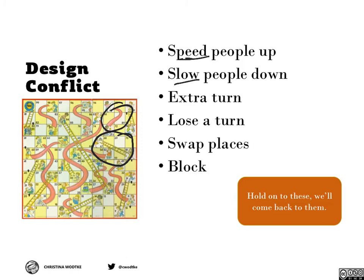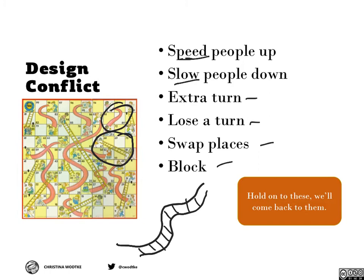You can give somebody an extra turn or a lose-a-turn, swap places, and block. When I was a kid I played Parcheesi all the time with my sister — everybody's trying to go all the way around and get to the middle, and everybody has multiple pieces. If you have two pawns, you can actually make a little blockade that stops the other pawn from moving past you. Suddenly they're stuck — it's a nice way to torture each other.